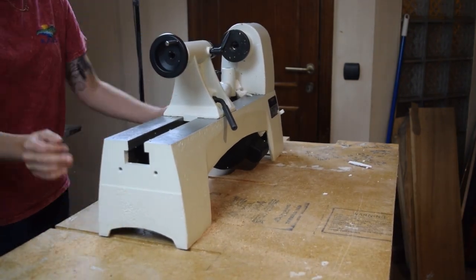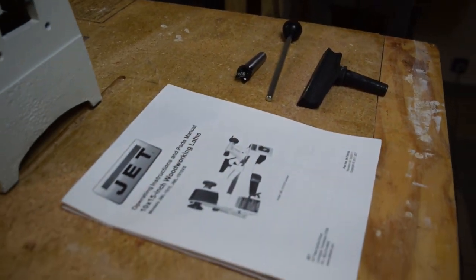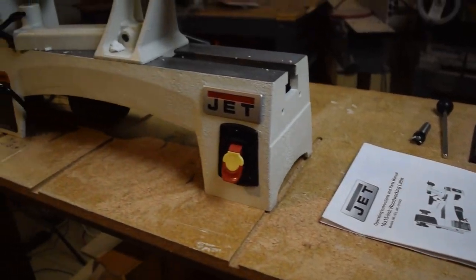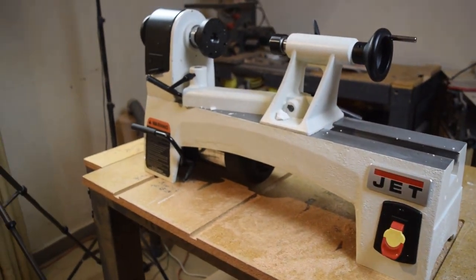The lathe came mostly assembled with just the spur center, the thing you put the blank on, the knockout rod, the thing you remove the spur center with when you're done, and the tool rest, self-explanatory, disassembled.